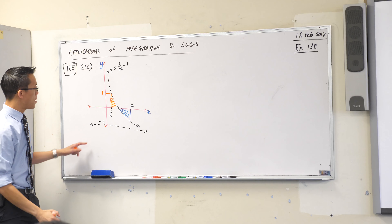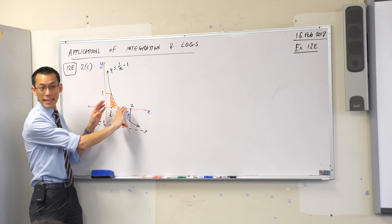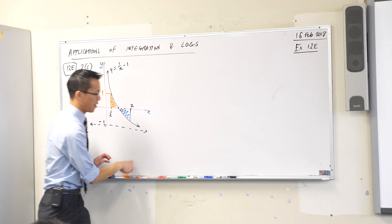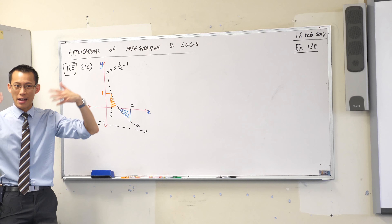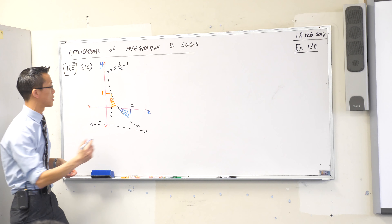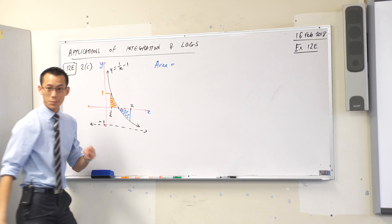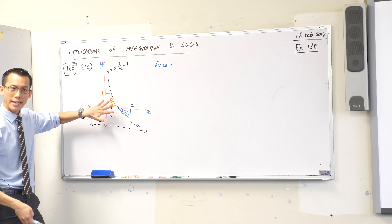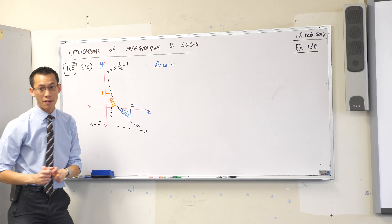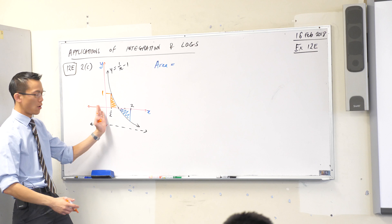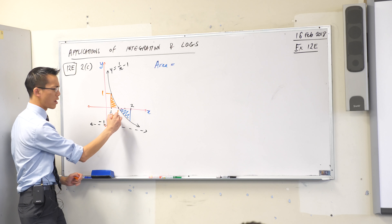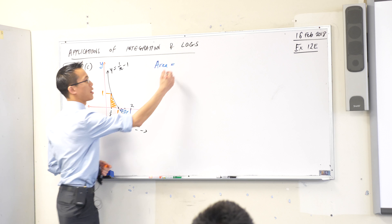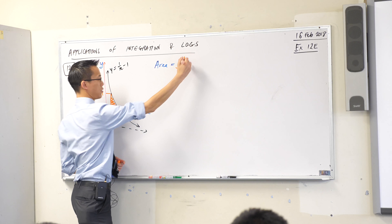So if they said just integrate from here to here, you'd actually get the signed area, not the actual area. That's why this region I've shaded in blue I'm going to have to treat differently to the other area, which I'm going to shade in orange. I'll have to work out each of these separately as two different integrals.